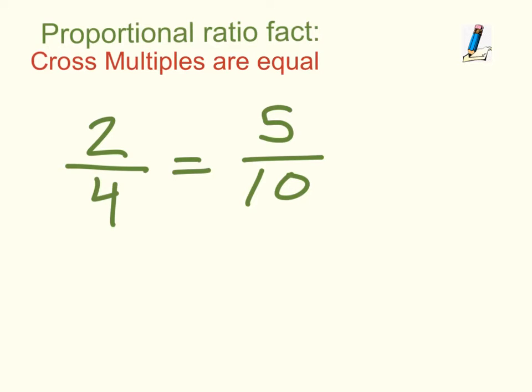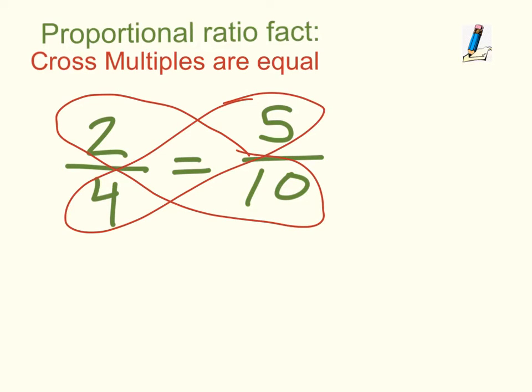Since we know both those things, let's explore what that means about cross multiples. We hear that word multiple and we're talking about multiply. Cross multiples would line up 2 and 10, and 5 and 4. If you look at those, 10 times 2 equals 5 times 4, which is true because that's 20 and 5 times 4 equals 20.